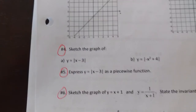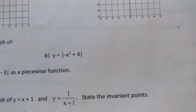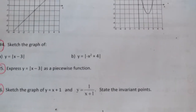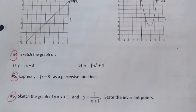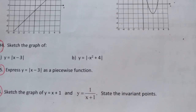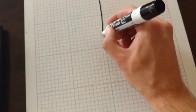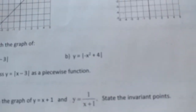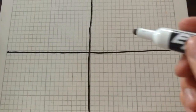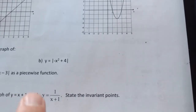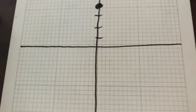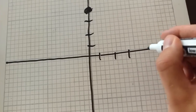We're going to do question 4, part B: graphing the absolute value of negative x² + 4. This is a quadratic, so it takes the form of a parabola. The negative in front of x² means it faces downward, and the +4 gives us our y-intercept. So our vertex is at (0, 4). We mark 1, 2, 3, 4 on the y-axis for our vertex and then apply the 1, 4, 9 rule we've learned for graphing quadratic functions.